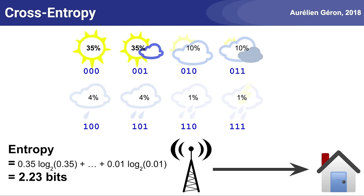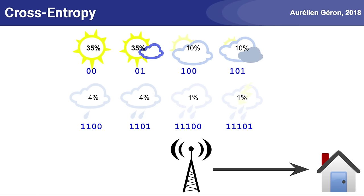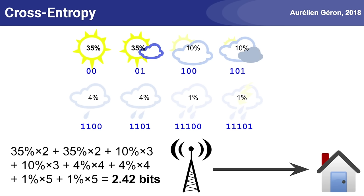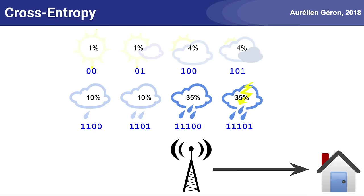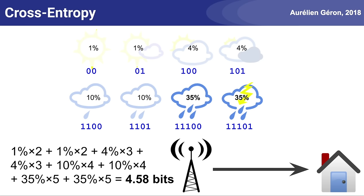We can do better. For example, let's change the code: we're now just using 2-bit messages for sunny or partially sunny weather, 3 bits for cloudy and mostly cloudy, 4 bits for light and medium rain, and 5 bits for heavy rain and thunderstorm. Note that our code is unambiguous — if you chain multiple messages, there's only one way to interpret the sequence of bits. For example, 011100 can only mean partially sunny followed by light rain. If you compute the average number of bits sent every day, you get 2.42 bits — that's our new and improved cross-entropy. Now suppose we use the same code in a different location where the weather is reversed — it's mostly rainy. If you compute the cross-entropy, you will find that it is equal to 4.58 bits. That's really bad — it's roughly twice the entropy.